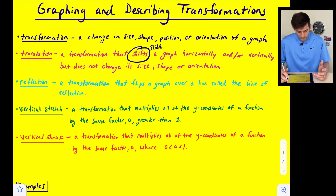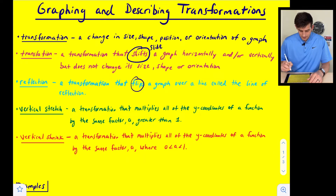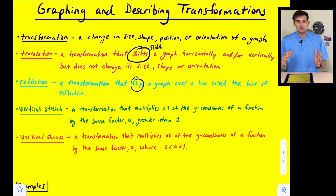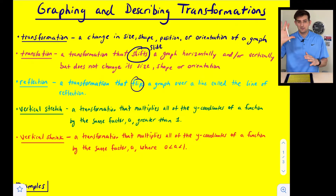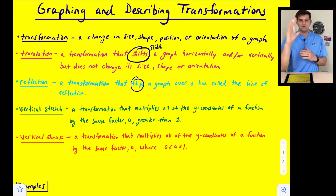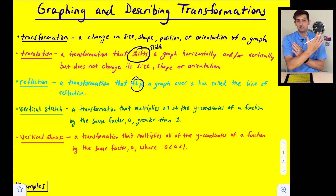Next is a reflection. A reflection is a transformation that flips a graph over a line called the line of reflection. You can think about looking into a mirror — you see the reflected image, and it's kind of the same idea with a graph. If I were to reflect my hand over to the other side, it would look like this, and whatever I reflected over is considered my line of reflection.